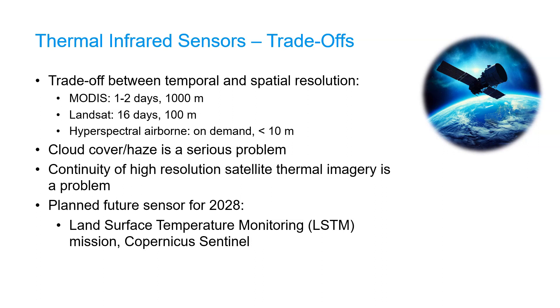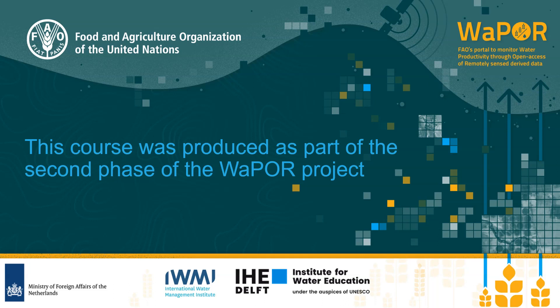These kind of data are essential for climate change monitoring, for agricultural applications and ecosystem monitoring. In this video you have learned about thermal infrared sensors, land surface temperature products, and trade-offs between the spatial and temporal resolution of these satellite sensors.